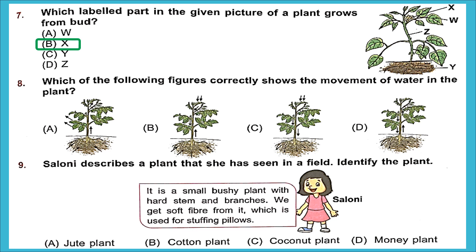Question 8: Which figure correctly shows the movement of water in a plant? Water is absorbed by roots and moves to the upper parts of the plant's body, then evaporates from leaves. It is not taken up by leaves from the air (as shown in B and C), nor released from roots to the soil (as in C and D). The right answer is A — upward movement of water from root to other parts of the plant.